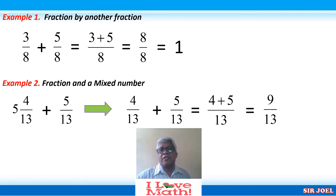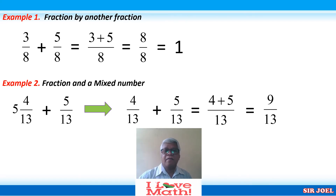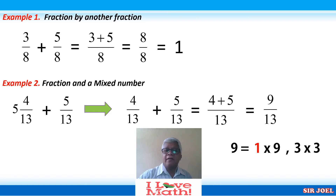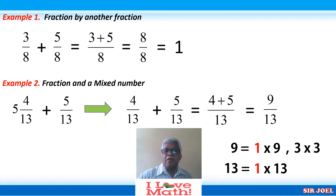Let us check — is 9 over 13 already written in its lowest term? The factors of 9 are 1, 3, and 9. For 13, we only have 1 times 13, so the factors are 1 and 13. Looking at the factors of 9 and 13, the only common factor is 1. Therefore, our fraction 9 over 13 is already in its lowest term since the only common factor of the two is 1.